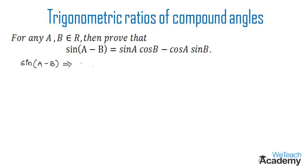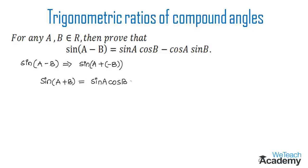sin(a - b) can be written in the form of sin(a + (-b)). Now it is in the form of sin(a + b), and we already know the formula of sin(a + b), which is equal to sin a cos b plus cos a sin b.